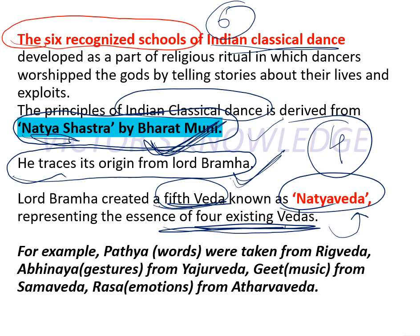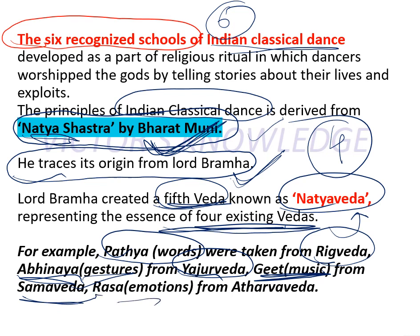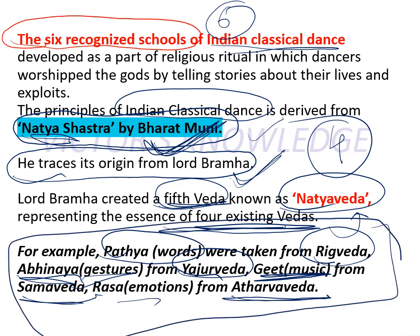Lord Brahma created the fifth Veda — Natya Veda — since there were already four Vedas. He took key principles related to dance and music from all four existing Vedas and compiled them into the Natya Veda. For example: the spoken words (pathya) in dance come from the Rig Veda; facial expressions and gestures (abhinaya) come from the Yajur Veda; the music and songs on which you dance come from the Sama Veda; and the emotions expressed during dance come from the Atharva Veda. You must remember these as they are.